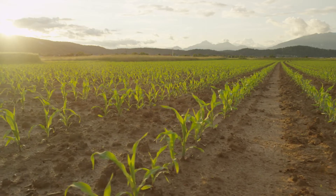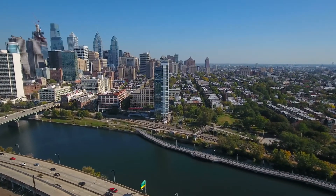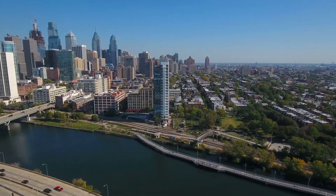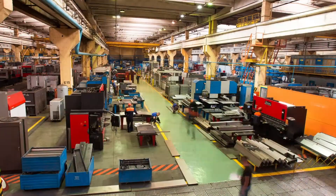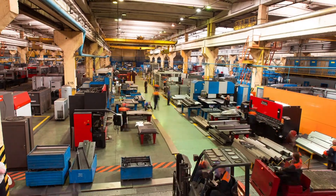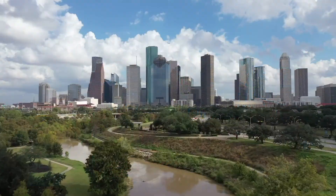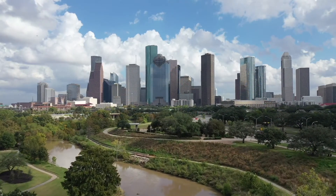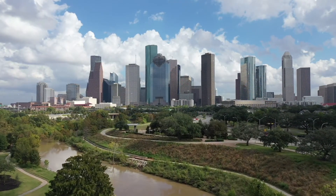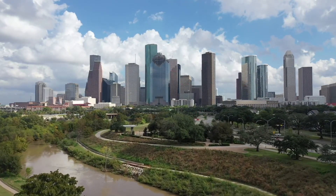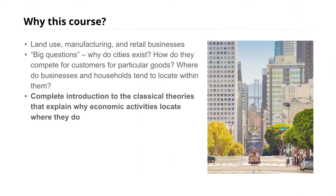But this has since been expanded to explain patterns of urban land use, the location of industrial producers, retail market areas, and even the question of why, from an economic perspective, cities exist at all. By the end of this course, you'll understand the classical economic theories that seek to explain why economic activities locate where they do in cities. I hope you're looking forward to learning — let's dive right in.